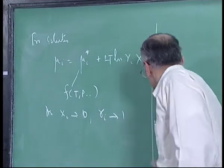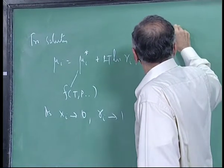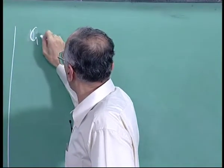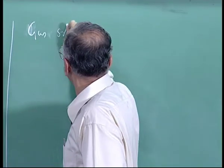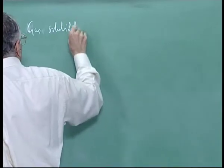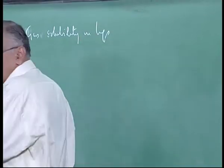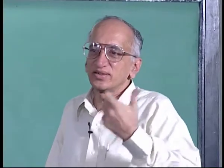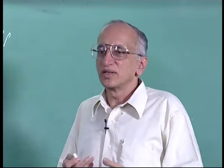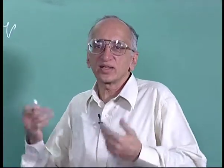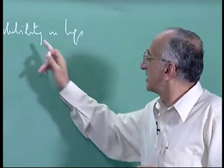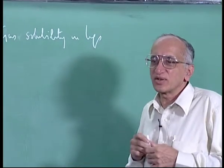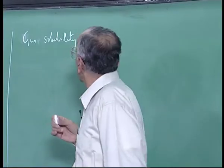Let us look at gas-liquid equilibria, or gas solubility in liquids. This is the crux of the fizz that you get when you drink your Coke. When you drink your Coke there is carbon dioxide dissolved in it. As temperature goes up the solubility decreases, so the gas comes out and you get a fizz. That is why you have to drink it cold — gas solubility decreases as temperature increases.